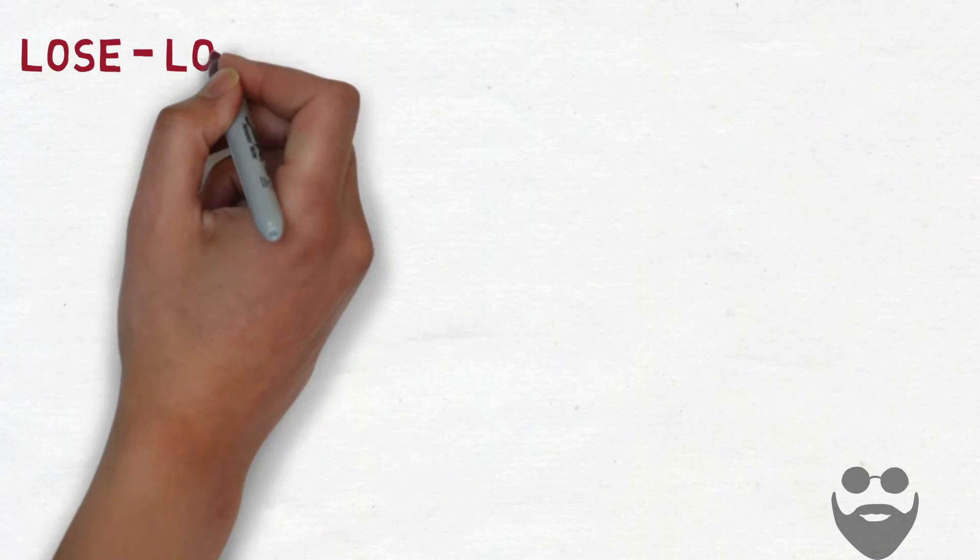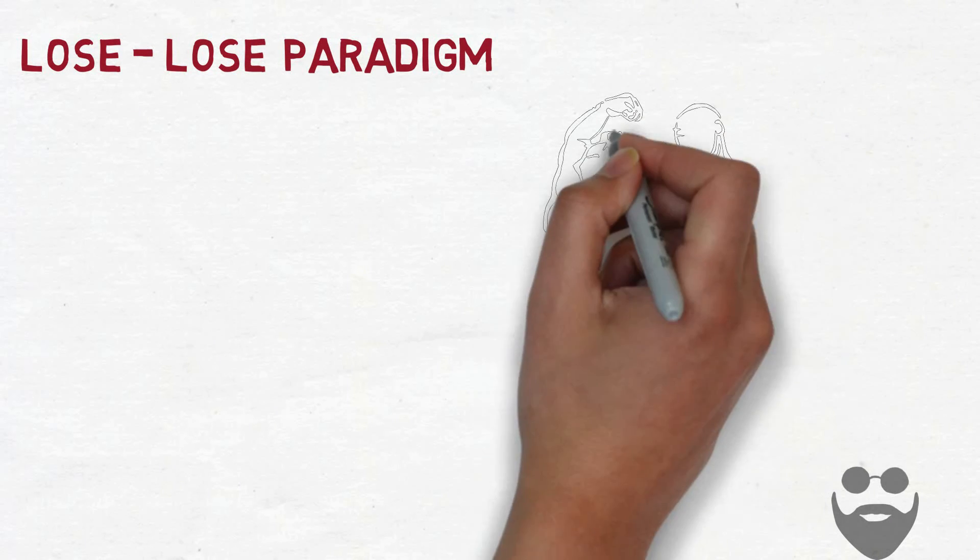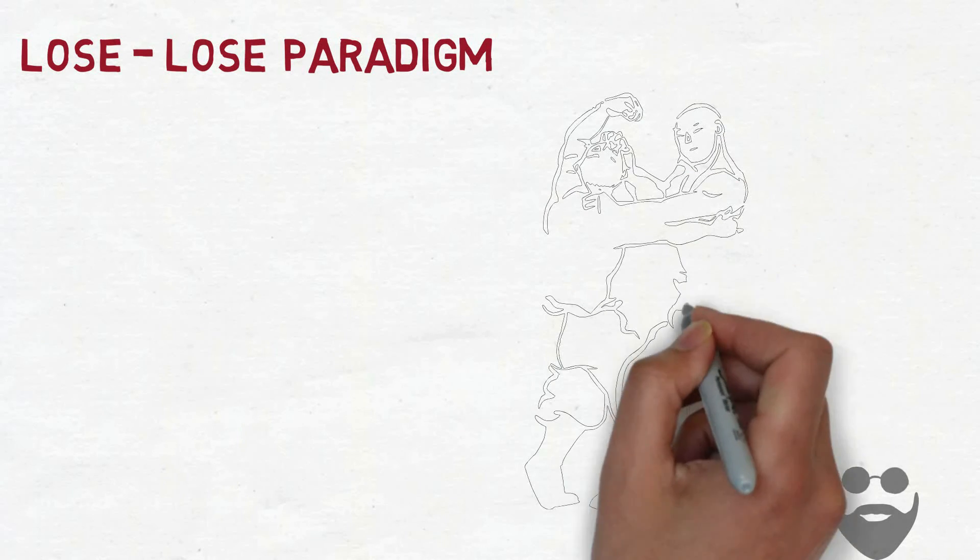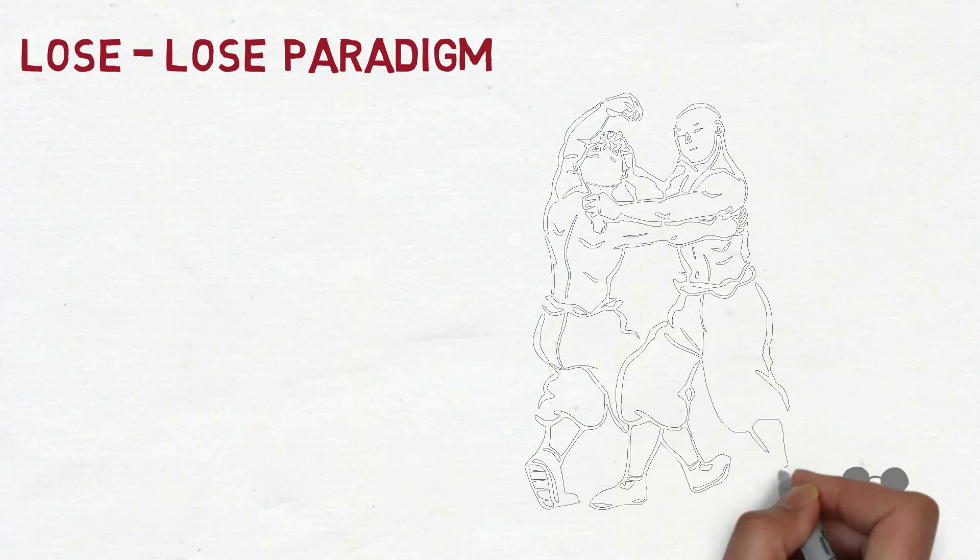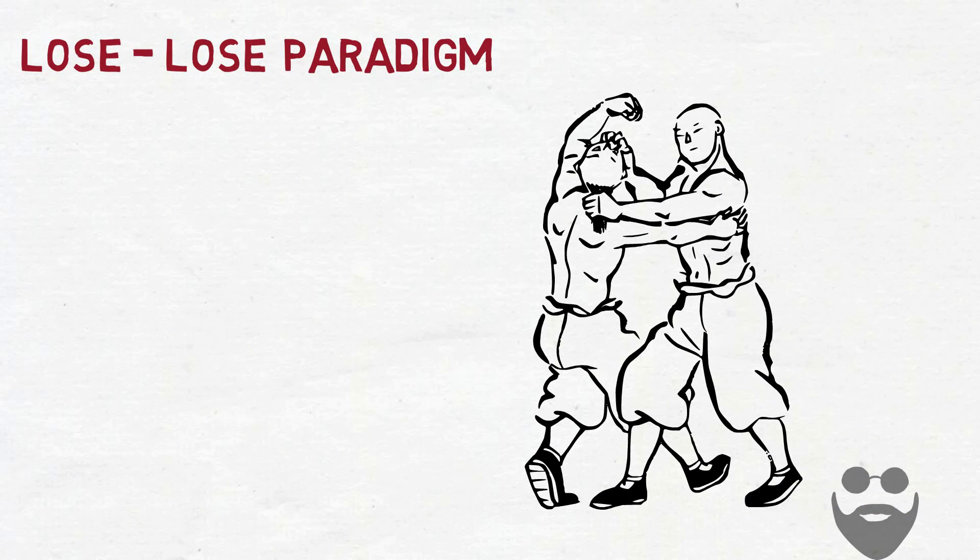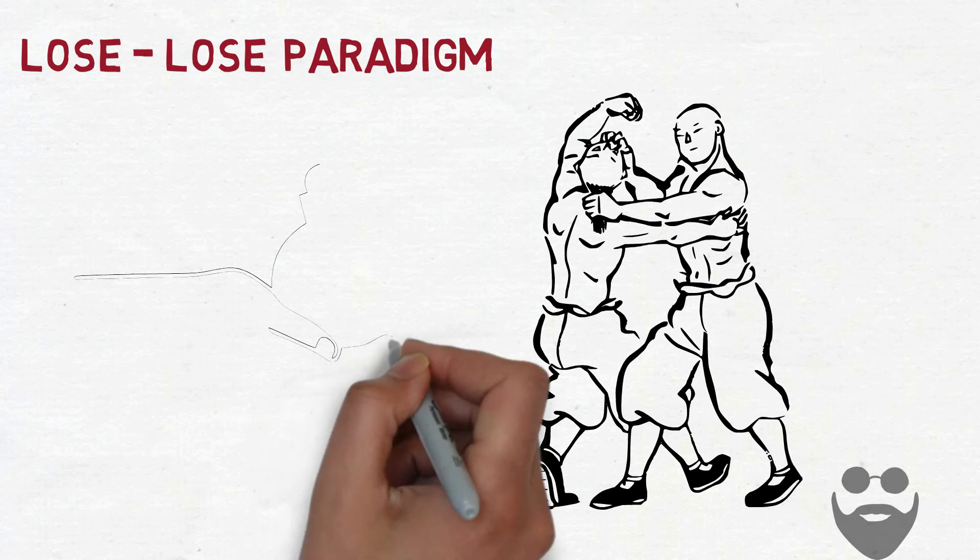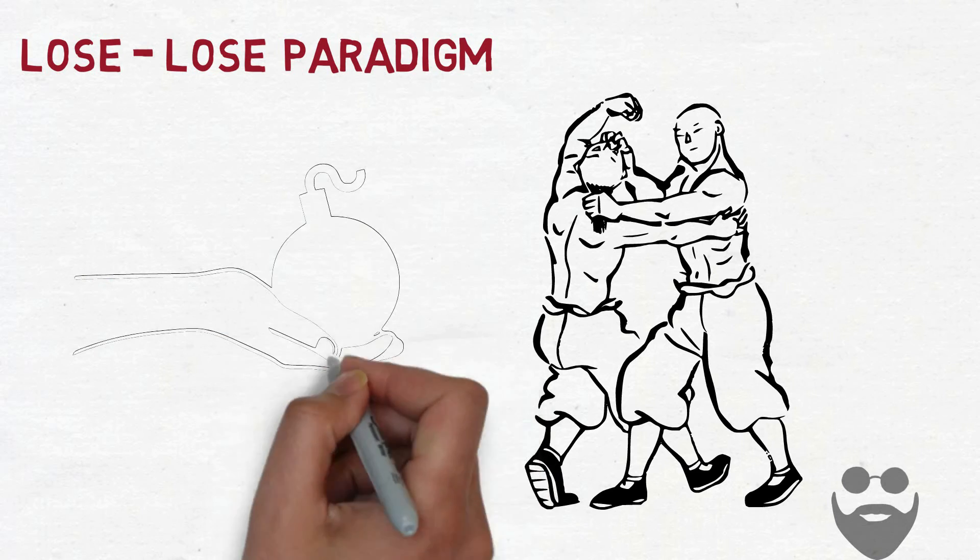The fourth paradigm is lose-lose, which is the situation where two ultra-stubborn people interact. One person wants the other person to lose, even if it means that he will lose too. All for spite, an extremely destructive endeavor to all who indulge in it, to be sure.